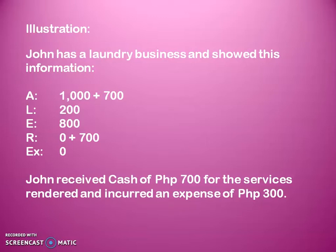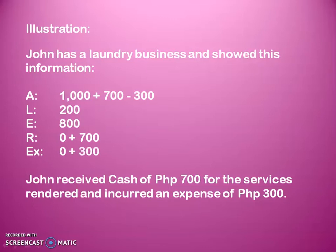For our second transaction, John incurred an expense of P300. Expense means a deduction from our cash, and cash is an asset. Thus, there's a deduction in asset of P300 since we paid an expense. That's why our cash decreased, and as a result, our total assets also decreased since cash is under assets. For the second effect, since we paid an expense, we will recognize the payment of expenses by adding P300 to the expense account. So there's a dual effect: a decrease in asset for P300 and an increase in expense account for P300 as well.